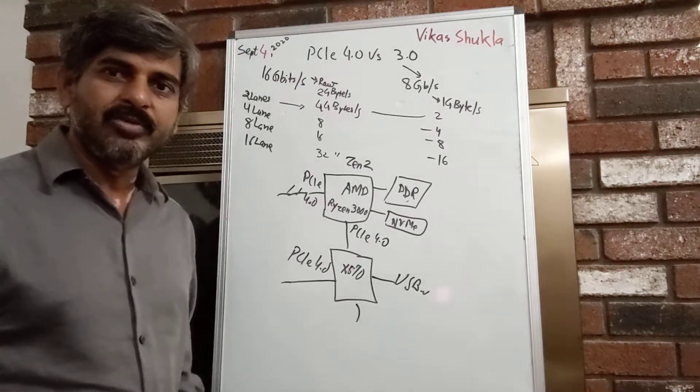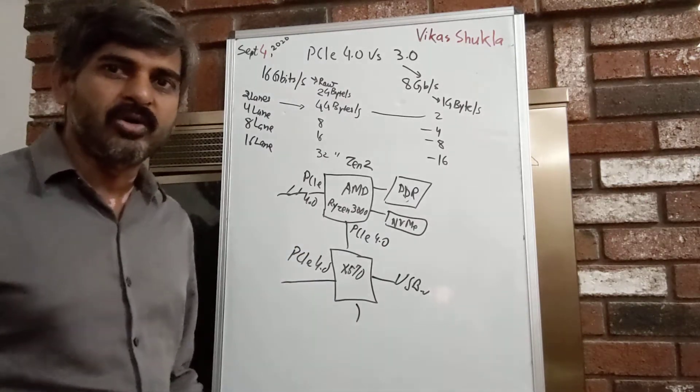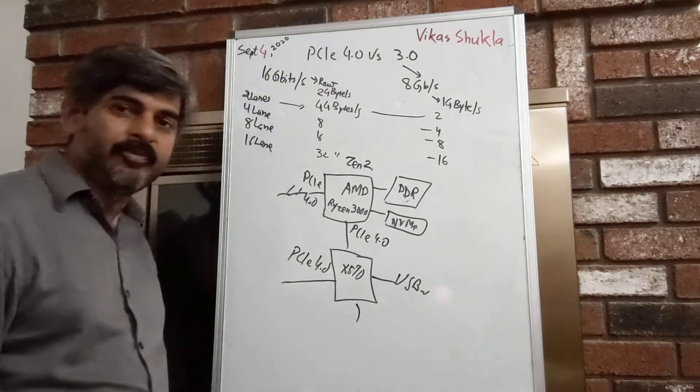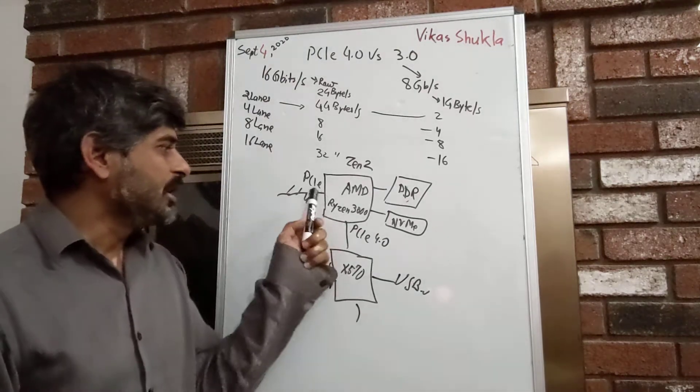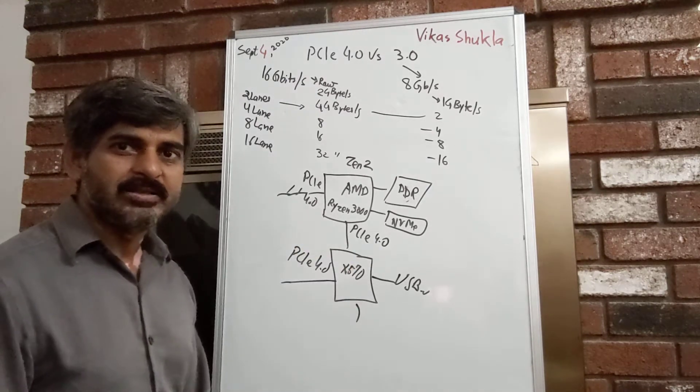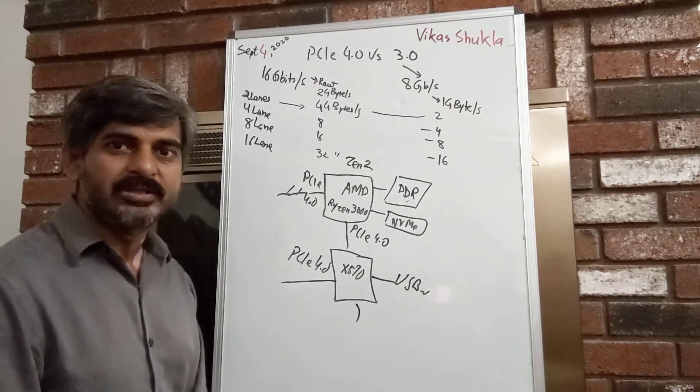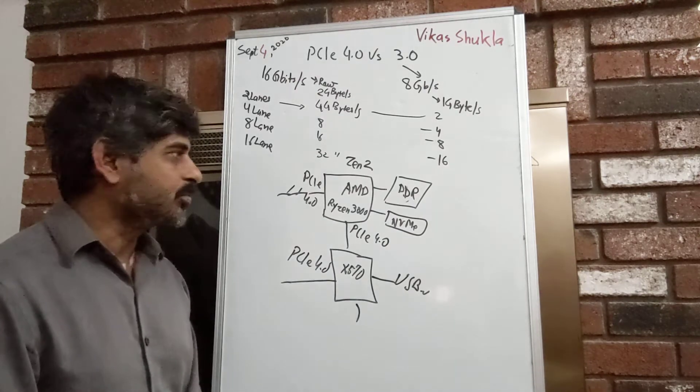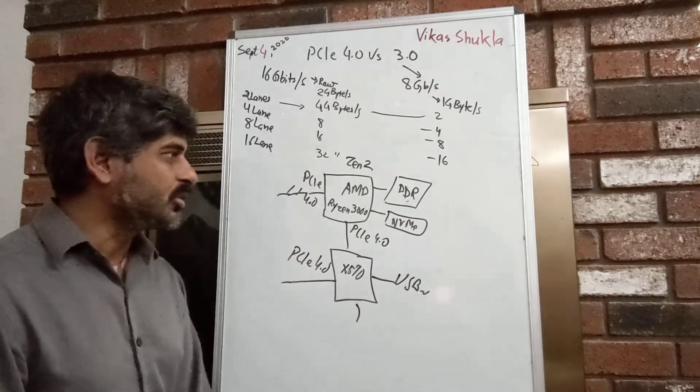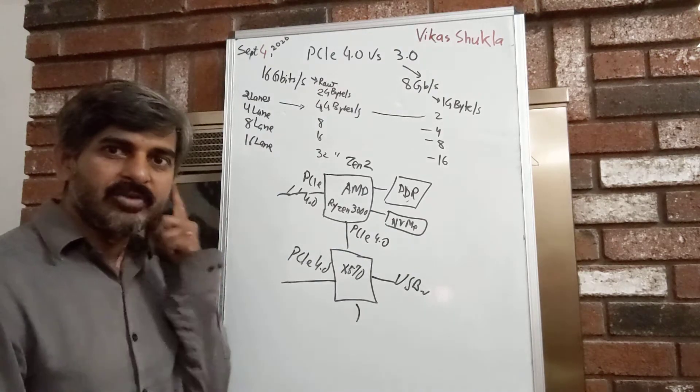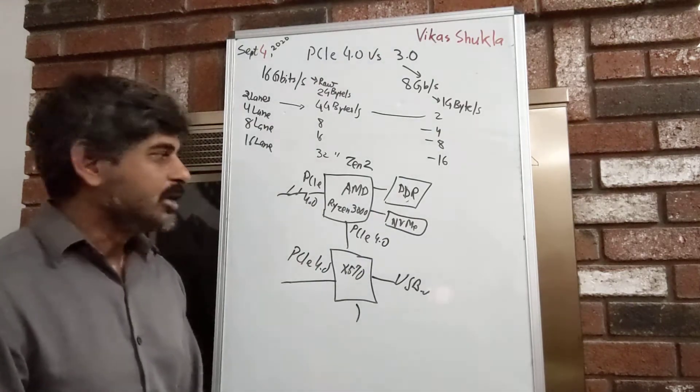Before I get into the details, I wanted to give you a quick overview of what a processor-based platform looks like. For example, AMD's Zen 2 Ryzen 3000 processor. There are similar platforms for Intel as well, for example Intel's most recent Tiger Lake processors. The previous version did not have PCI Express 4.0, so that is something new. It's a more recent phenomenon like the next six months or last one month for Intel.